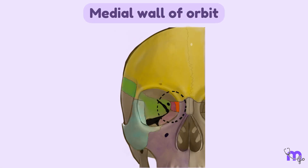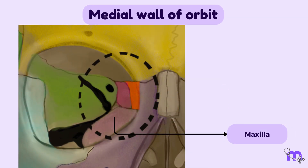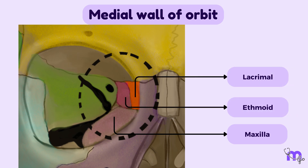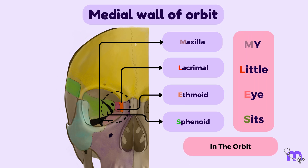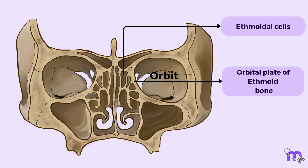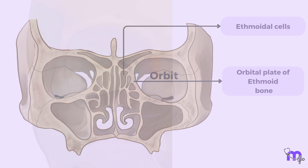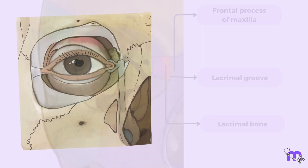The medial wall of the orbit is a composite of four bones: the maxilla, lacrimal bone, ethmoid bone, and sphenoid bone. A helpful mnemonic — 'My little eye sits in the orbit' — helps in remembering these bones. The orbital plate of the ethmoid bone dominates the medial wall and houses ethmoidal cells. The lacrimal bone and the frontal process of the maxilla collaborate to form the lacrimal groove, cradling the lacrimal sac.